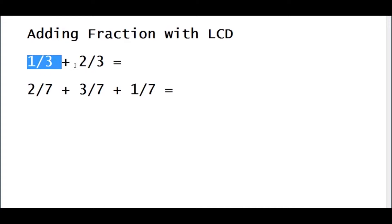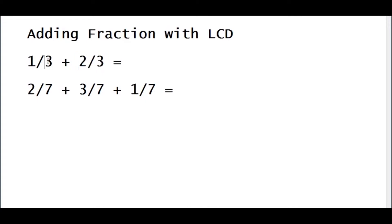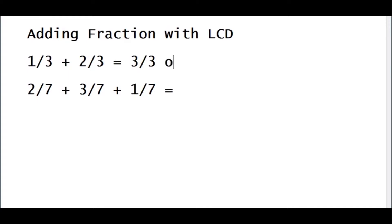So here I have 1 over 3 and 2 over 3. The technique in adding fractions is very simple. If both denominators are the same, then simply copy that and just add the numerators. In this example, we have 1 plus 2, so you have 3, and your denominator stays 3. So 3 over 3, or 1. Very simple.